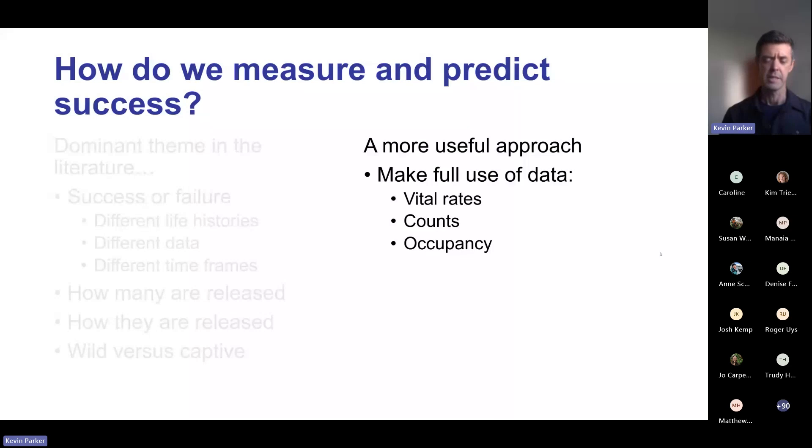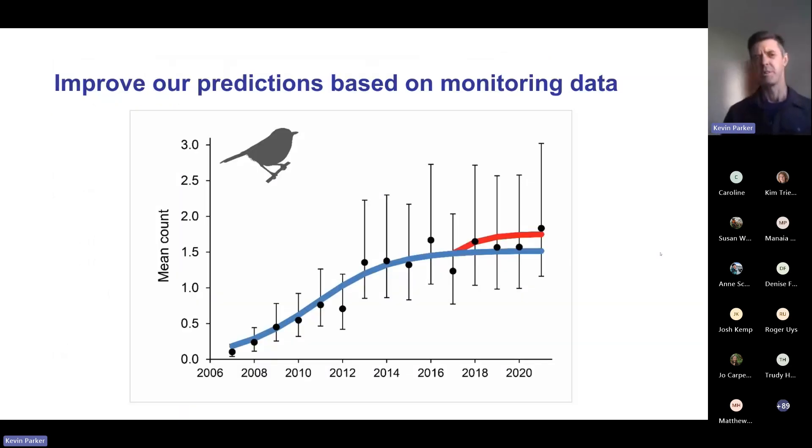We can also use counts which are applied to a lot of release sites, not just for the translocated species but for broad scale surveillance monitoring. We can also make use of occupancy data - how does occupancy change over time from release? What we want to do is use these monitoring data to improve our predictions.